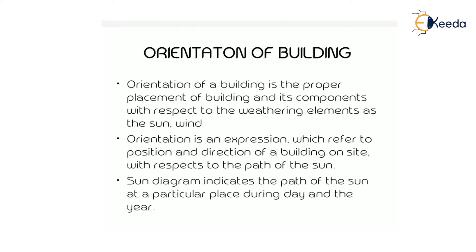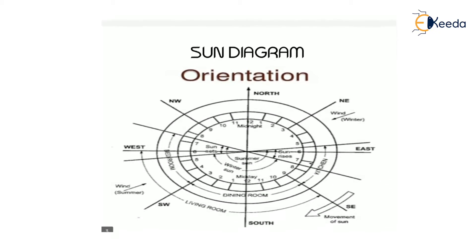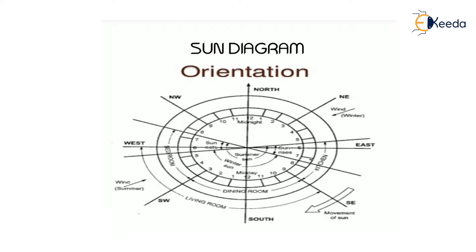Orientation is an expression which refers to the position and direction of a building on a site with respect to the path of the sun. A sun diagram indicates the path of the sun at a particular place during the day and the year. The orientation of a building according to the sun is done using the sun diagram.